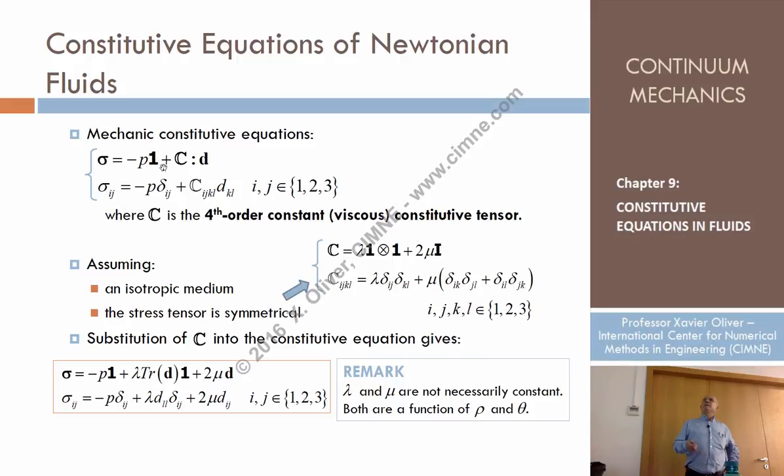Look, doesn't this recall the same that we had in elasticity? The definition of linear elasticity was sigma equals C times epsilon. And here you have epsilon, you have D, which is epsilon dot typically, the velocity of change of the strains.